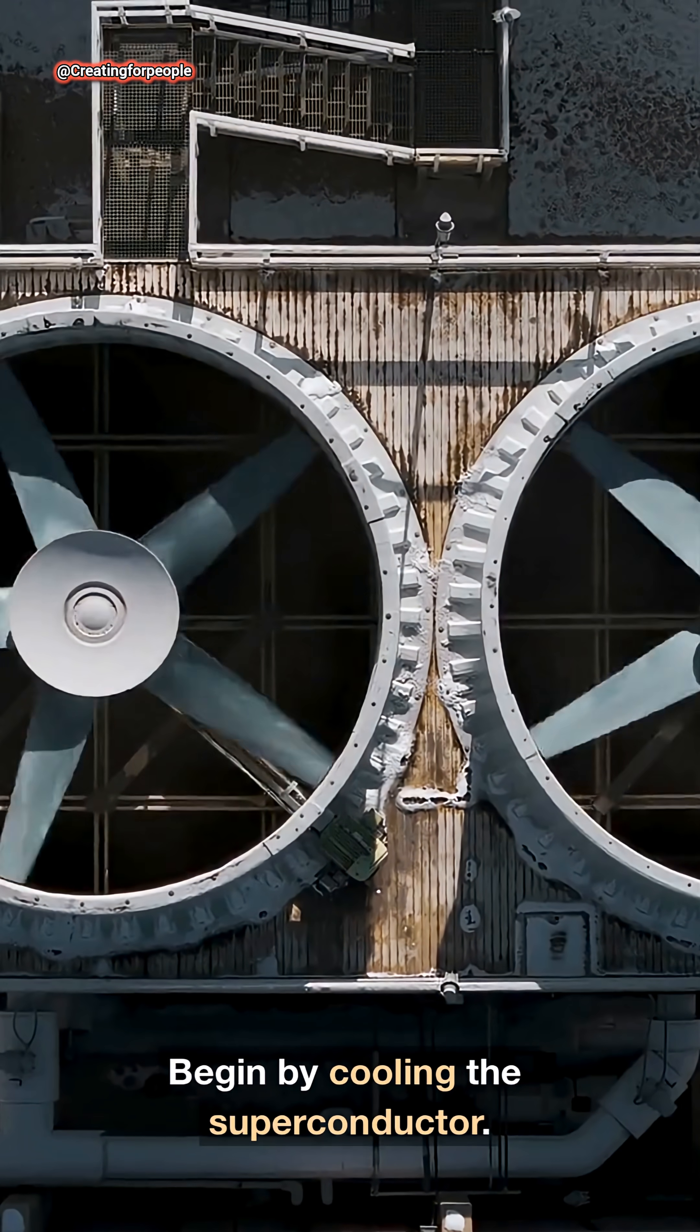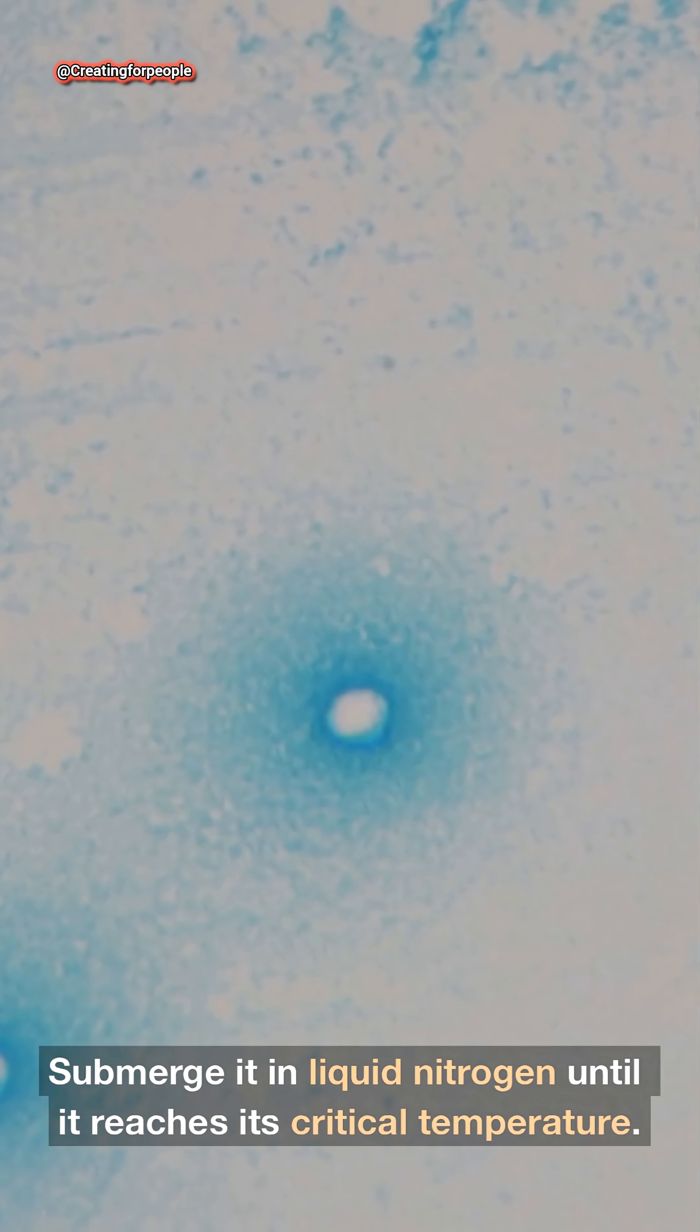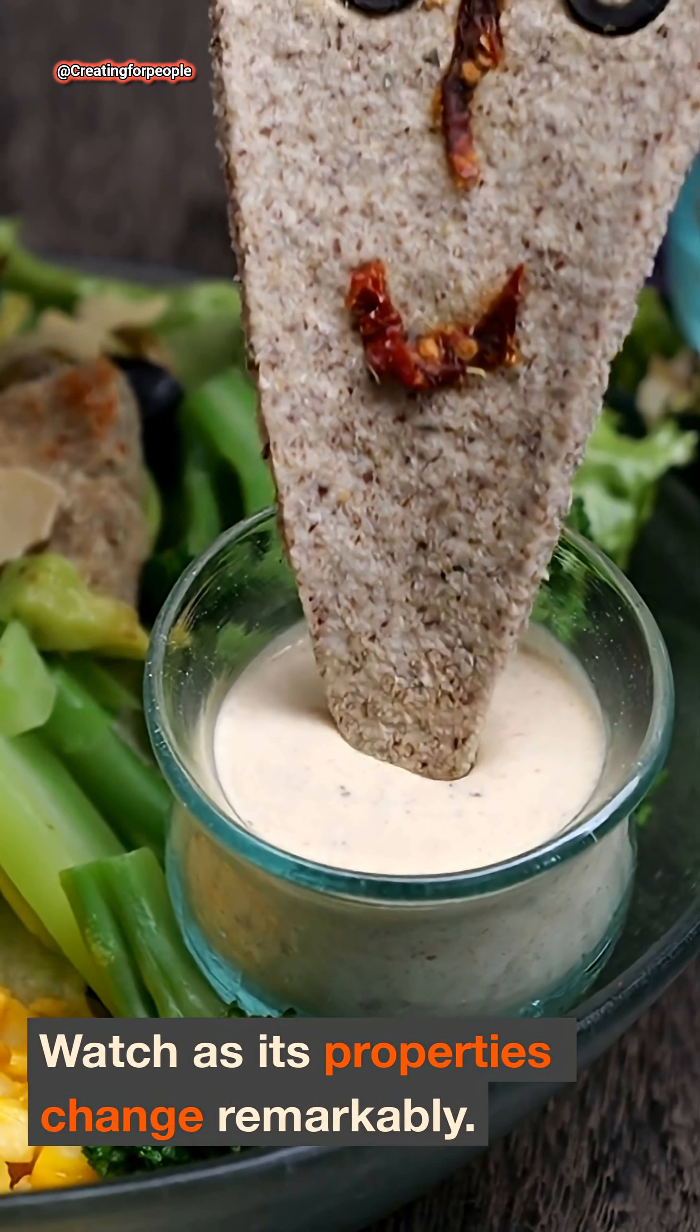Begin by cooling the superconductor. Submerge it in liquid nitrogen until it reaches its critical temperature. Watch as its properties change remarkably.